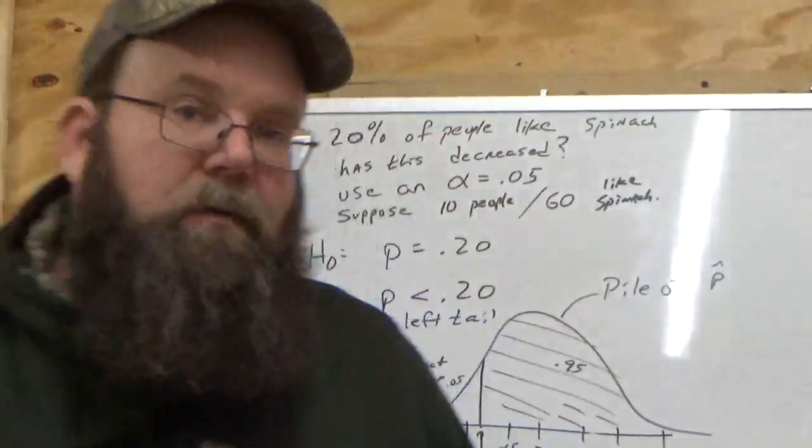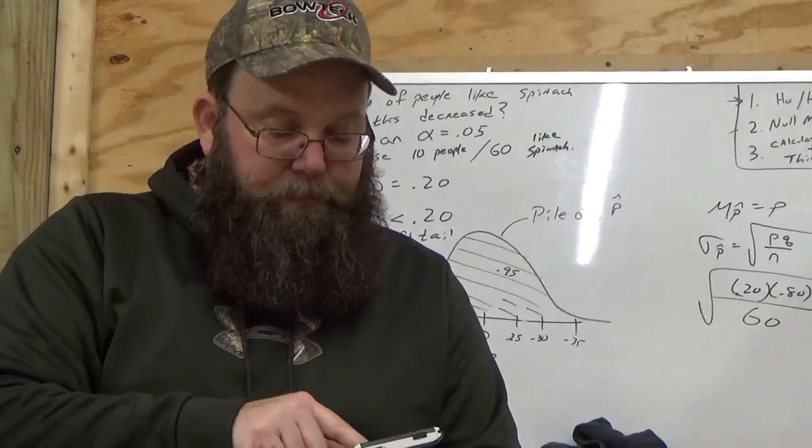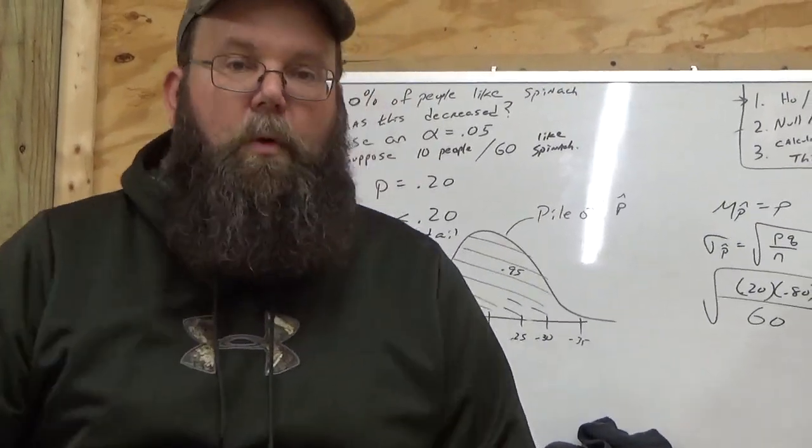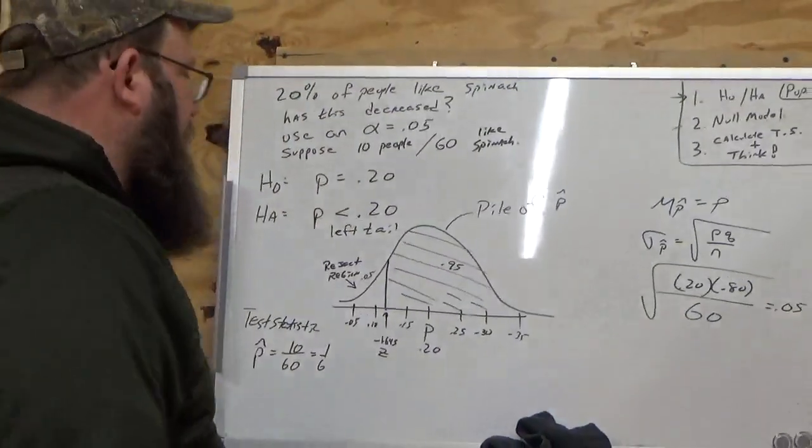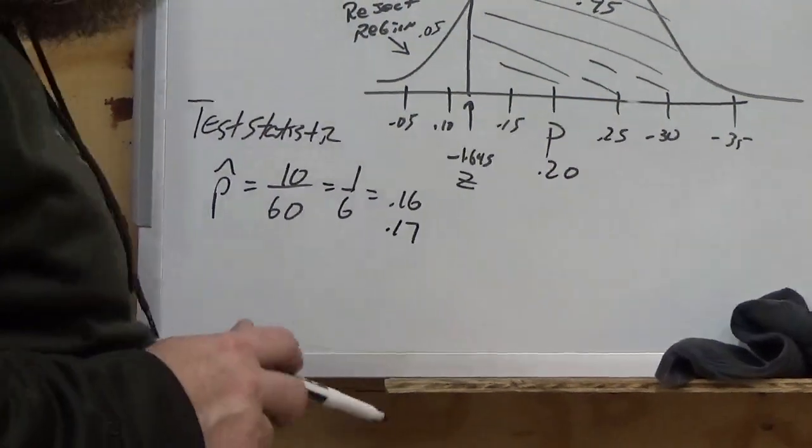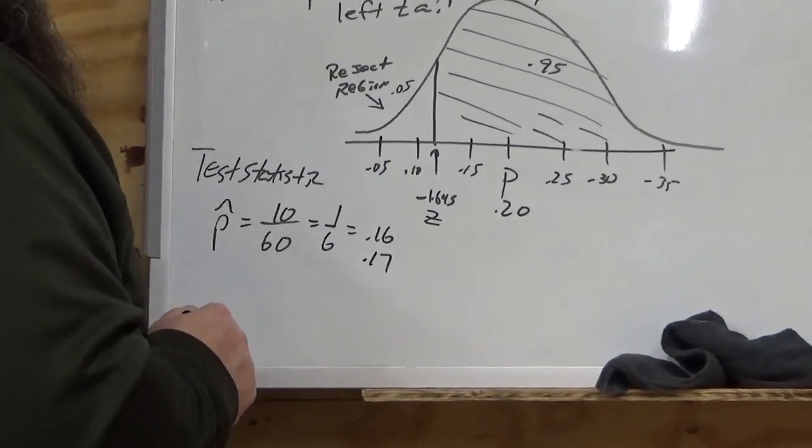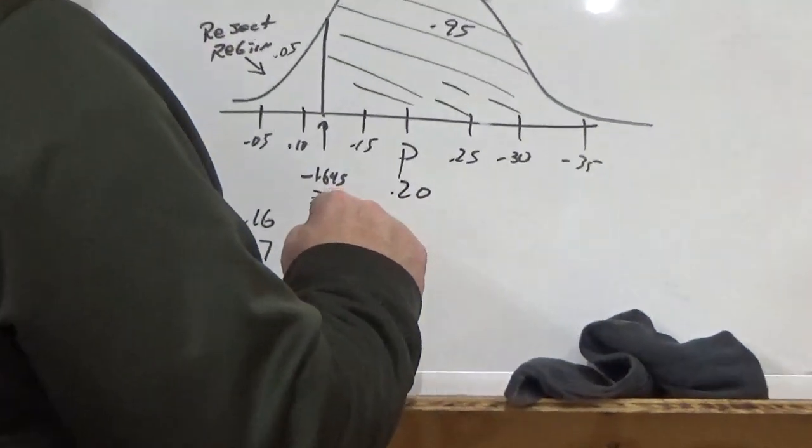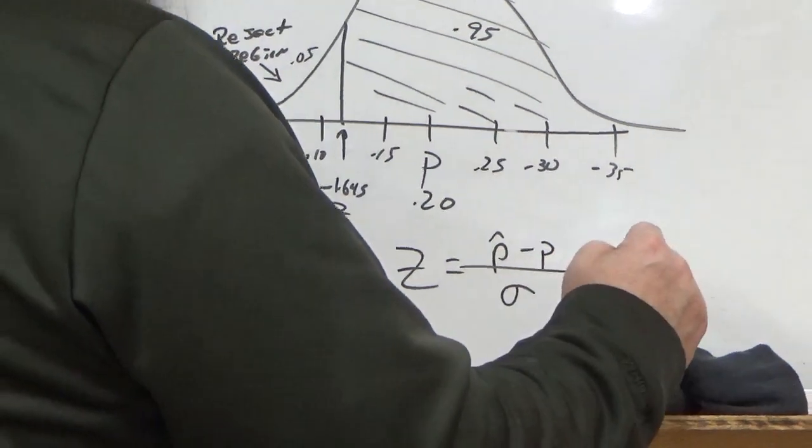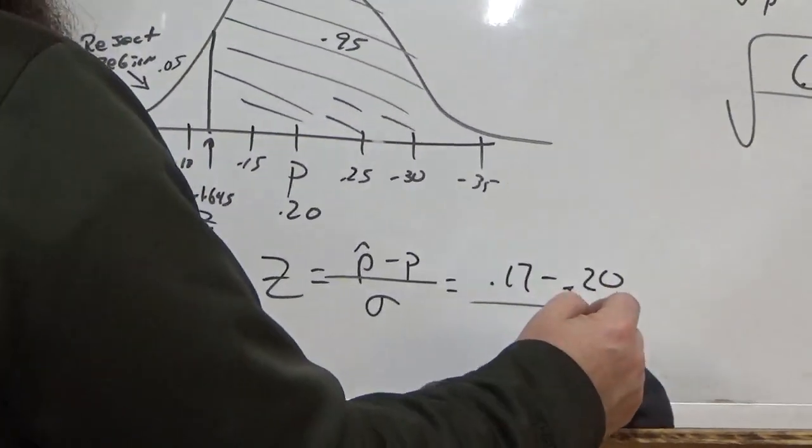10 out of 60 is 1 out of 6. 1 divided by 6. It's 16%. About 16%. We'll round it up to 17%. So, 0.17. P-hat is 0.17. So, what do we have to do with that 0.17? We've got to calculate our Z-scores. 0.17. So, P-hat, Z-score. Z-score for P-hat minus P divided by standard deviations. So, we're going to say 0.17 minus 0.20 divided by 0.05.